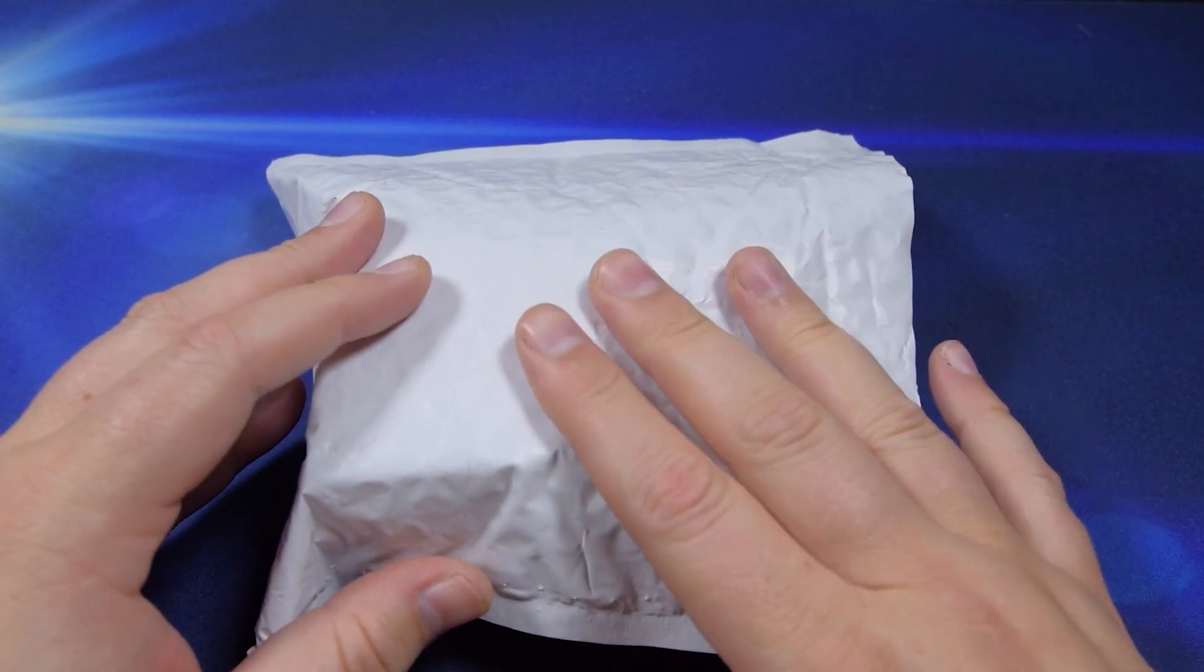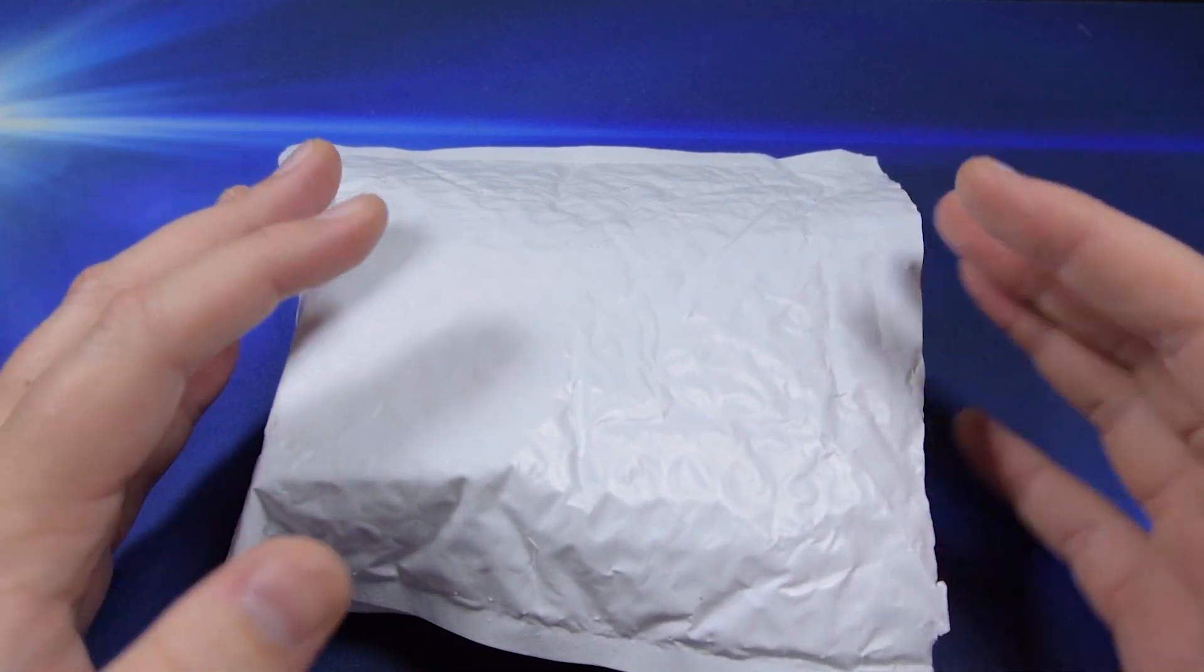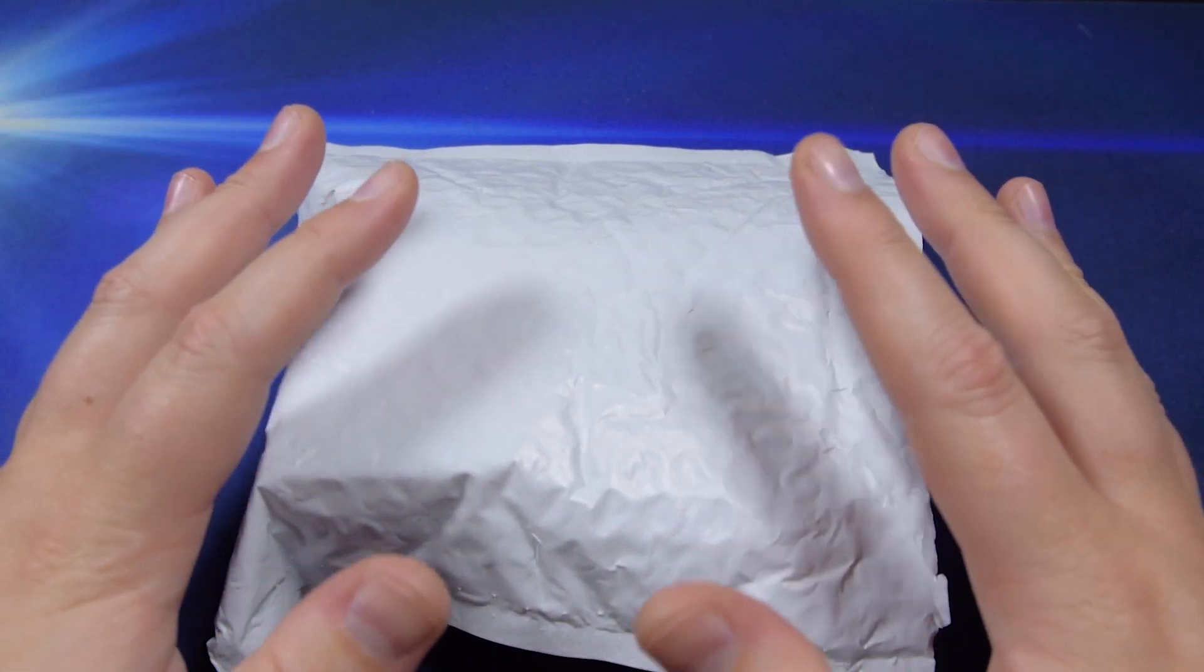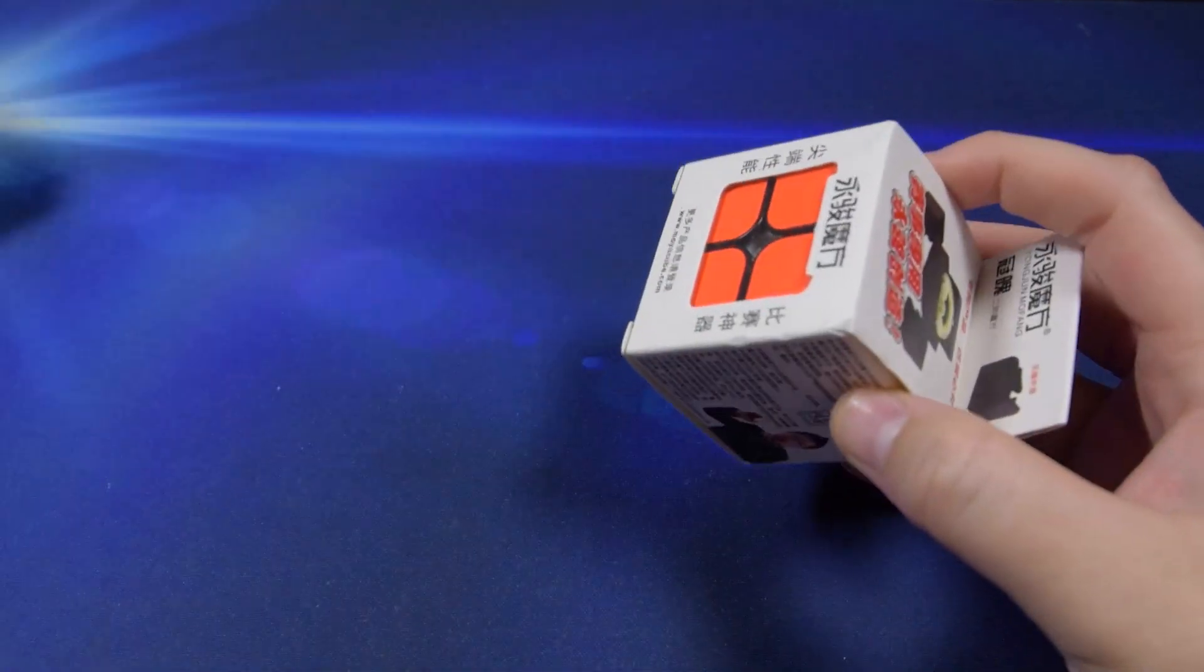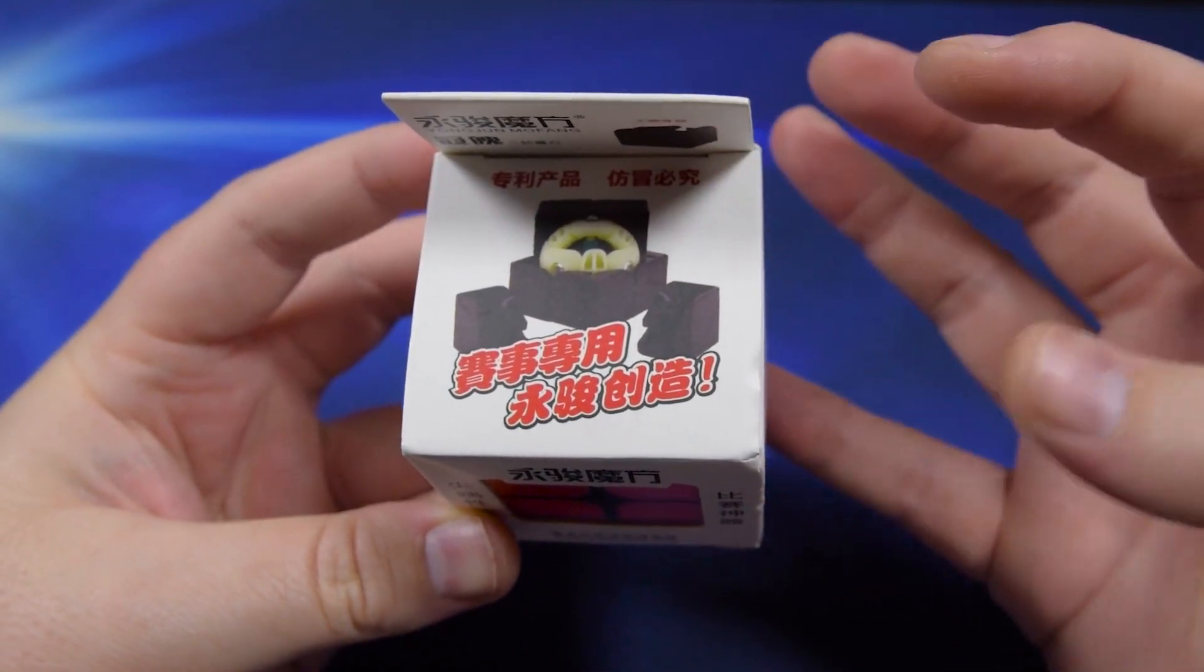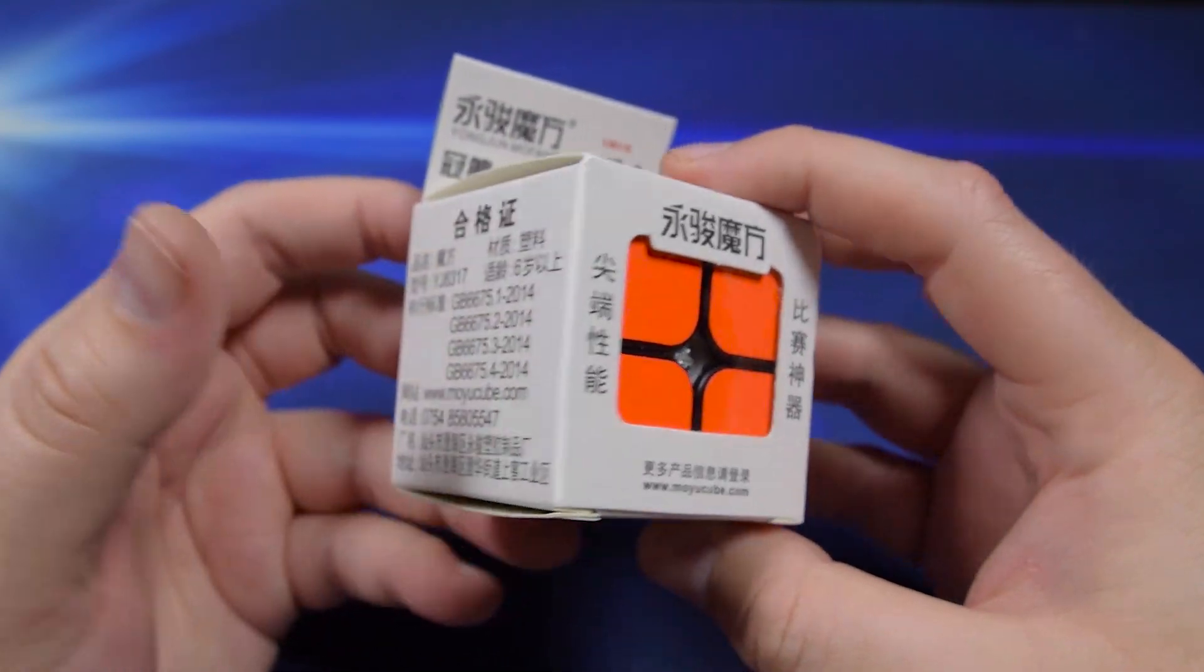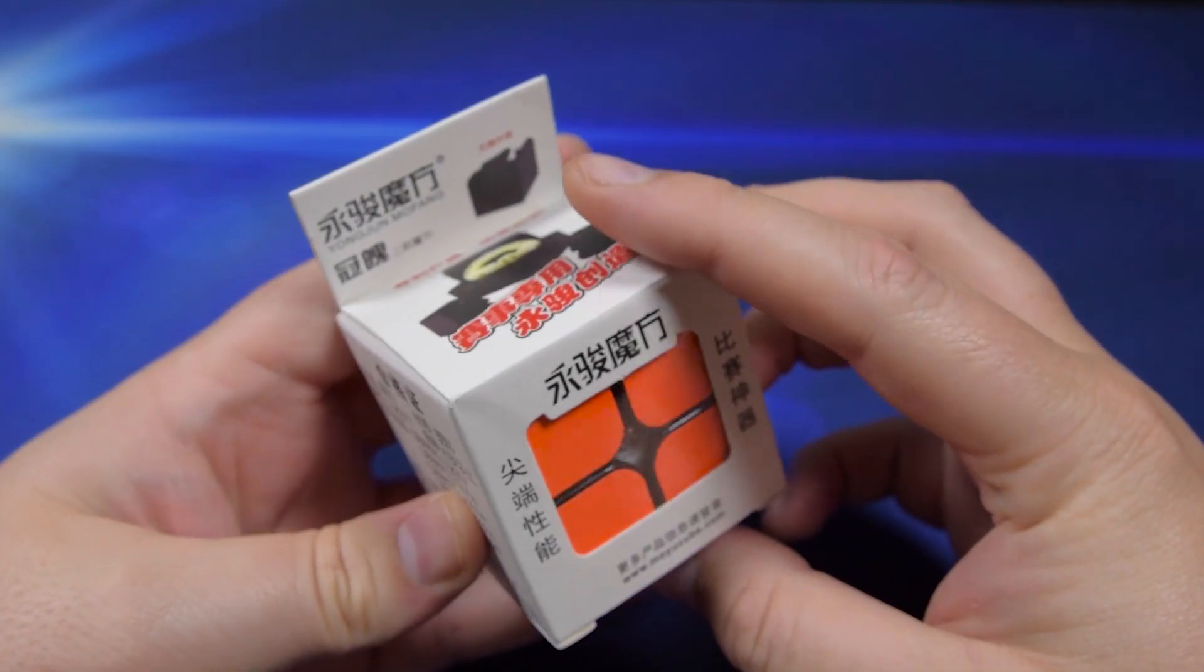It's in the Guan series by YJ, like the Guan Long and the Guan Su, which is a pretty good 4x4 that's out recently. I'll have a review out on that soon by the way. But this is the Guan Po, so I'm pretty excited for this. It's pretty inexpensive and that's exciting because I really like the idea of good puzzles at a cheap price. It's only $3.50 on Cubes for Speed.